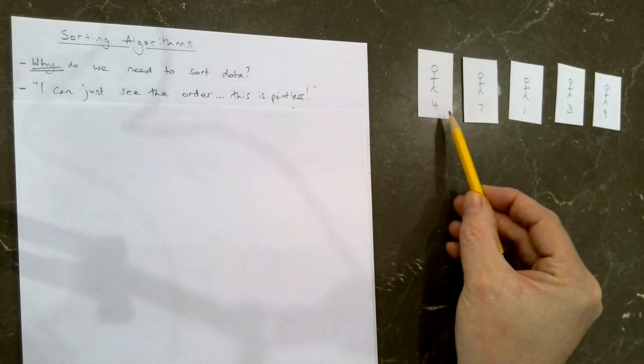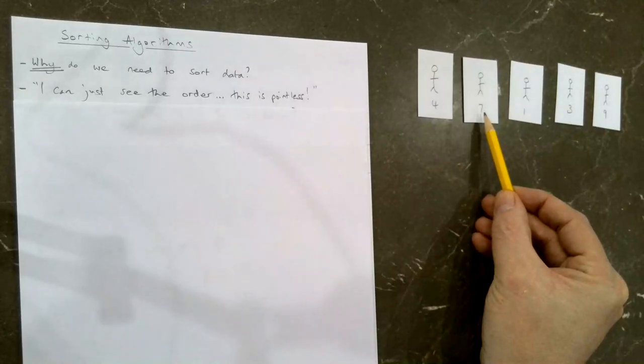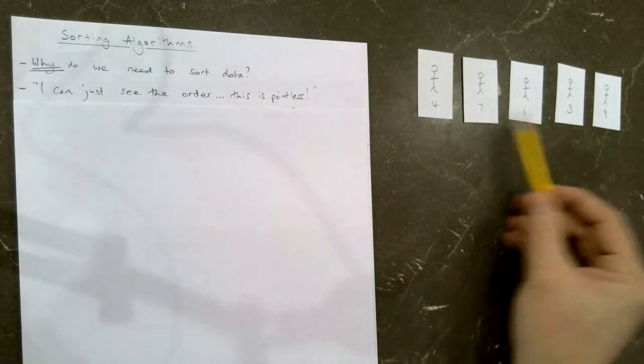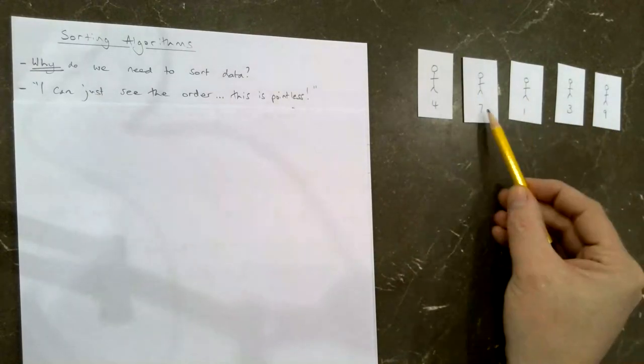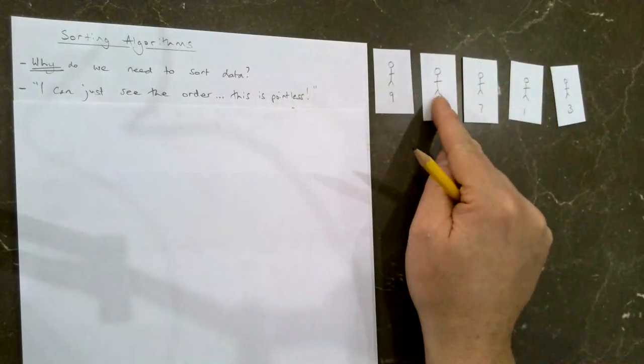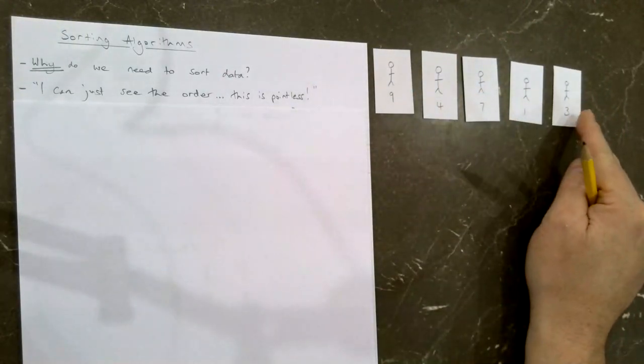You've looked and thought four's currently the biggest, seven's bigger than four, seven's currently the biggest, one, no, seven's currently the biggest, three, no, seven's still the biggest, oh, nine's bigger than seven. And then you found the biggest one, and then you can put that at the front. And that is technically an algorithm.